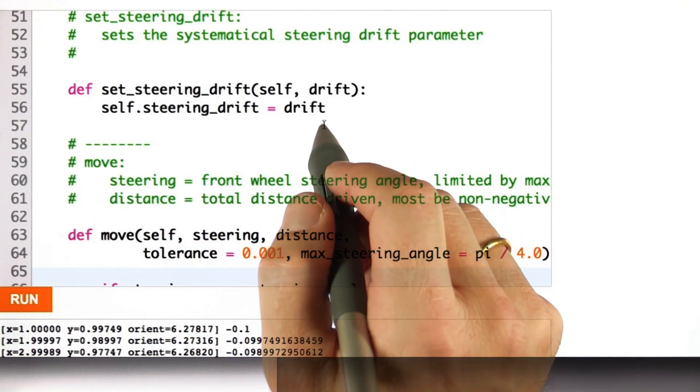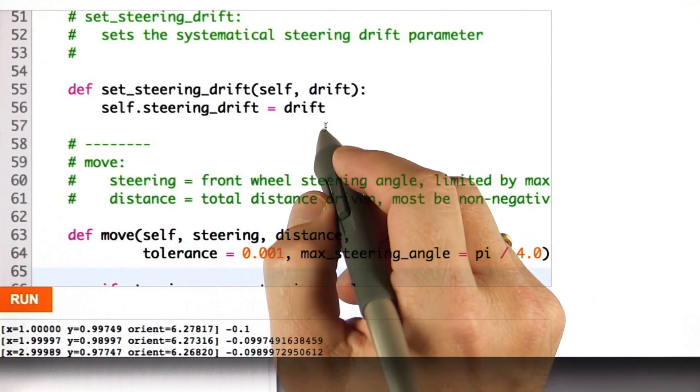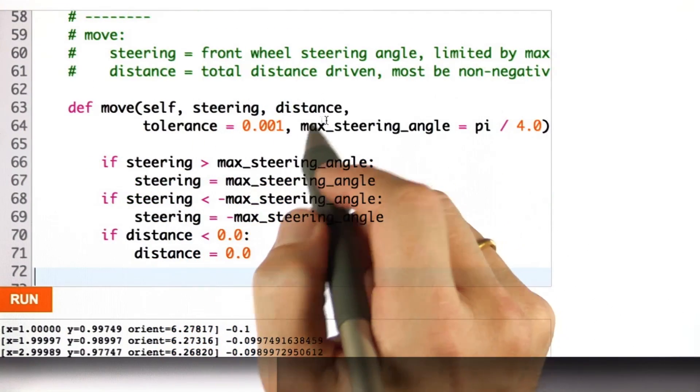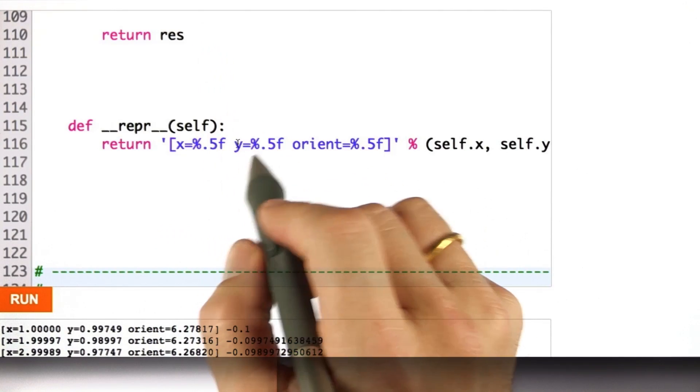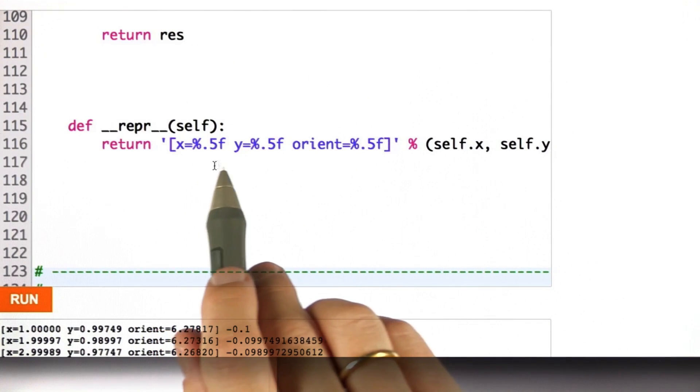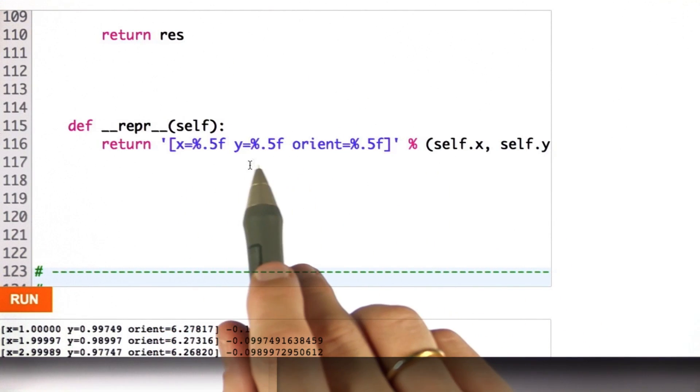There's also something called drift, which you won't use right now, but later on it will become handy. And there's your move command. All that you've implemented before. And I've improved a little bit the printout of the coordinates using floats.